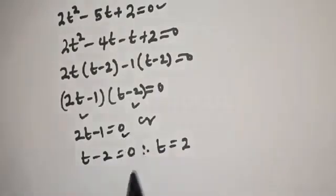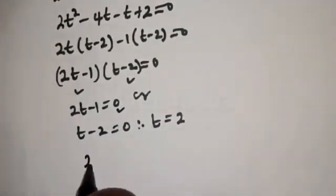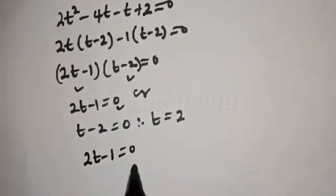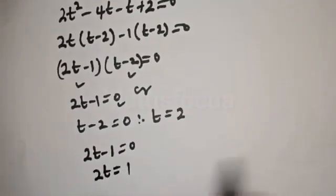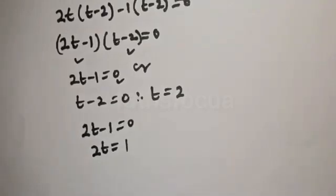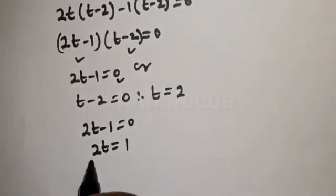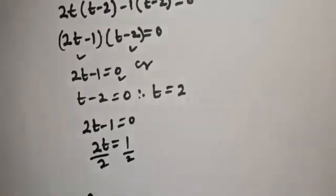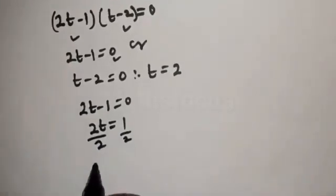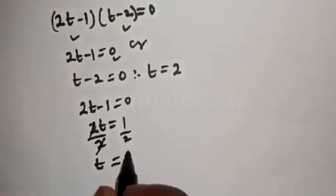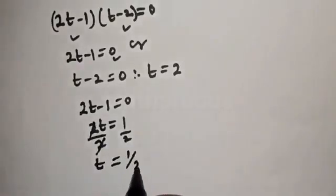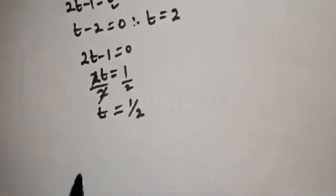From the first case: 2t minus 1 is equal to 0, so 2t equals 1. Dividing both sides by 2: t is equal to 1 over 2.